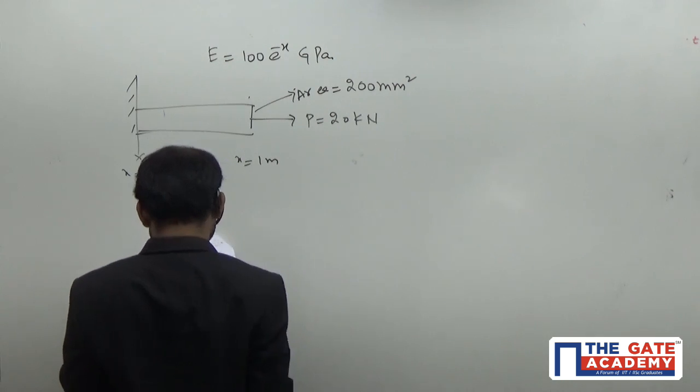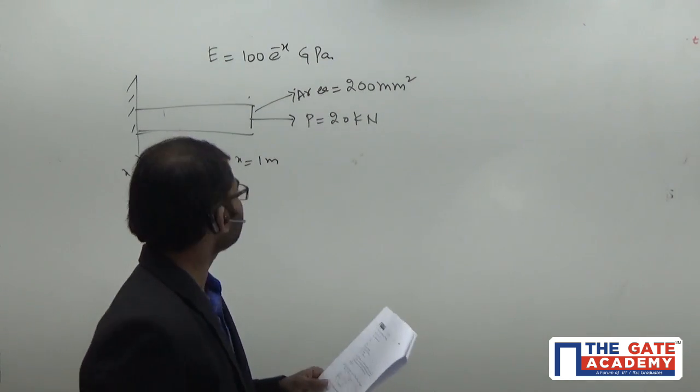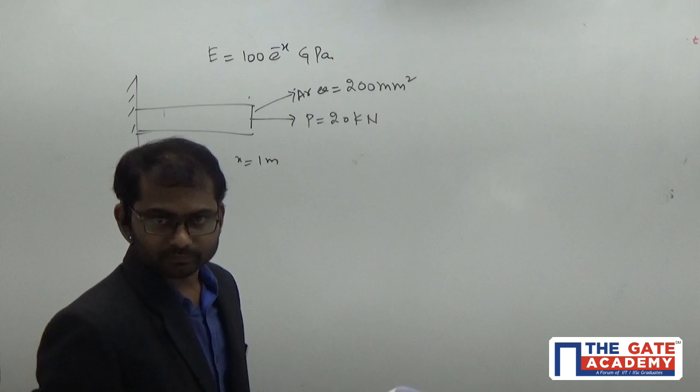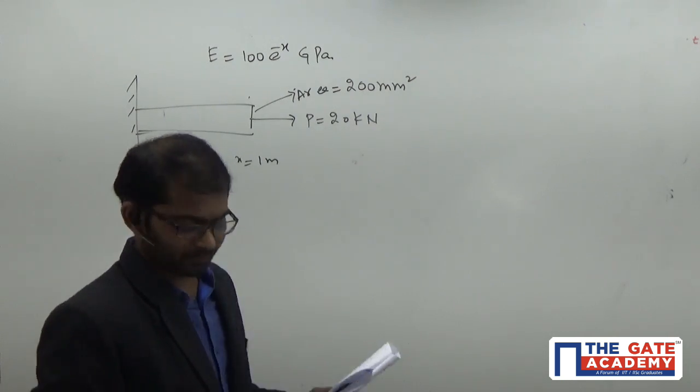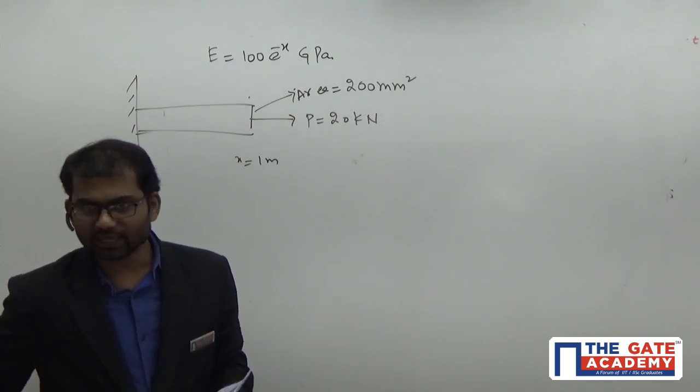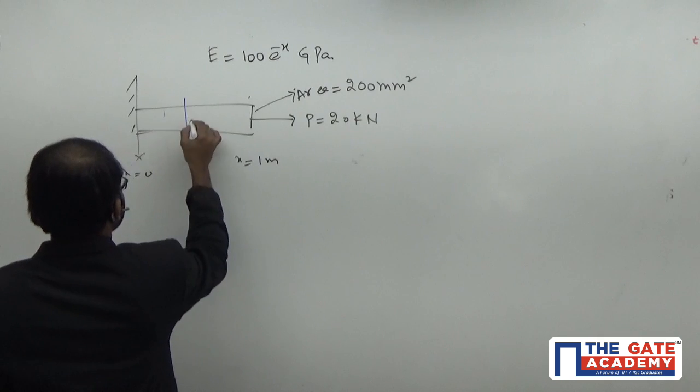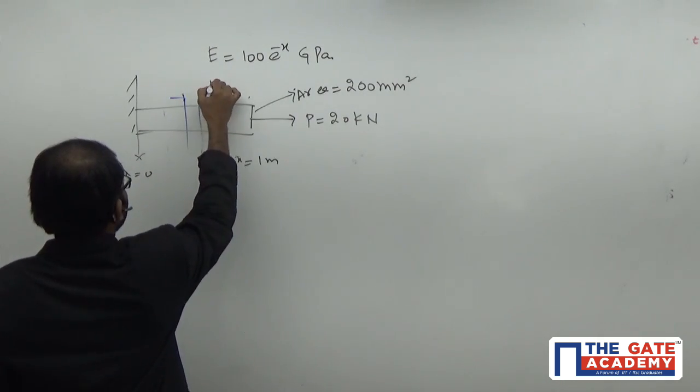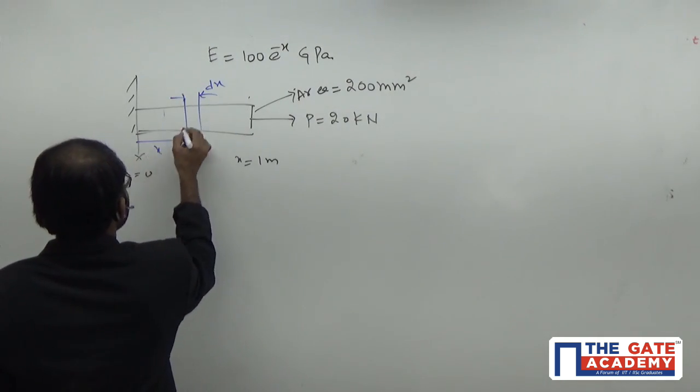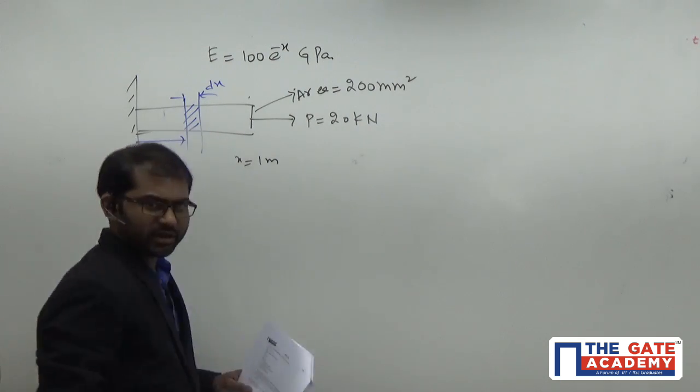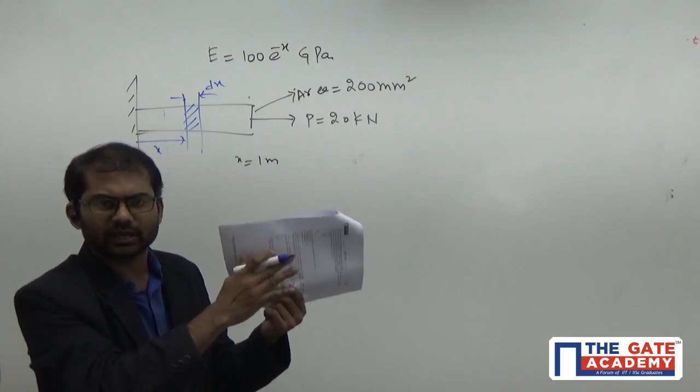You have to find out the elongation of this particular bar. What we're going to do is take a small element of length dx at a distance of x. Let's find out the elongation of this small element and integrate all over the length.